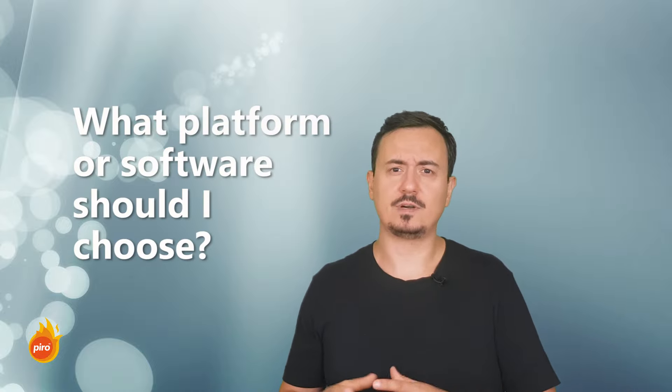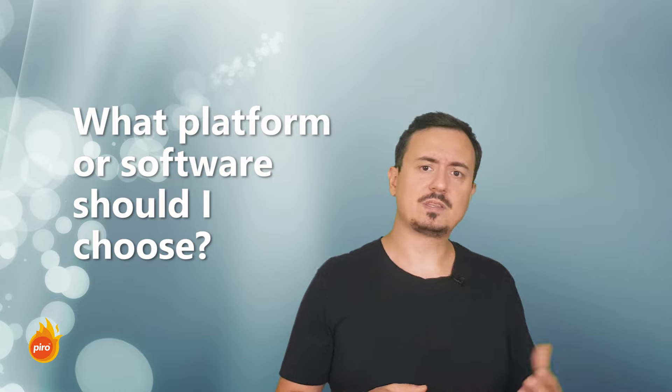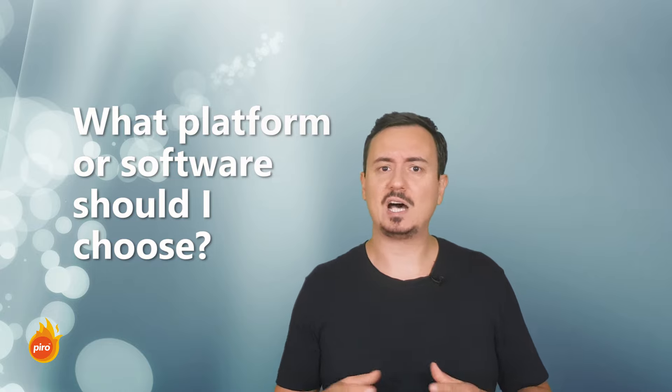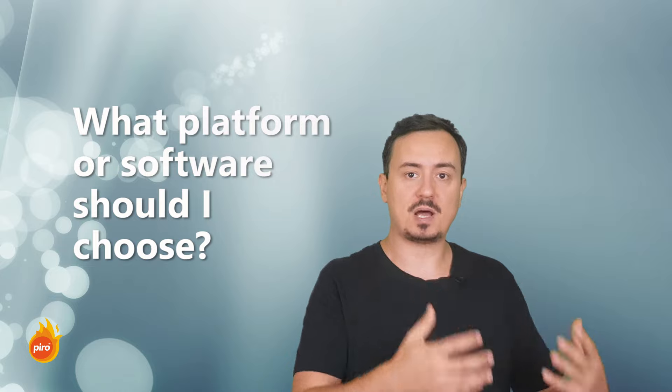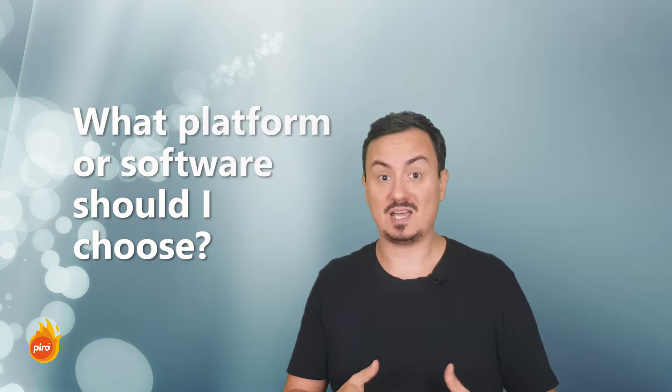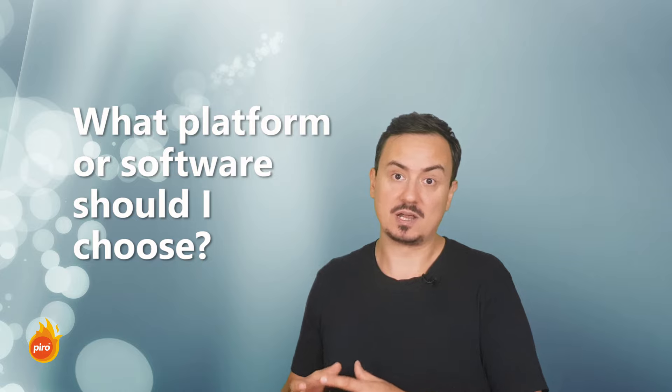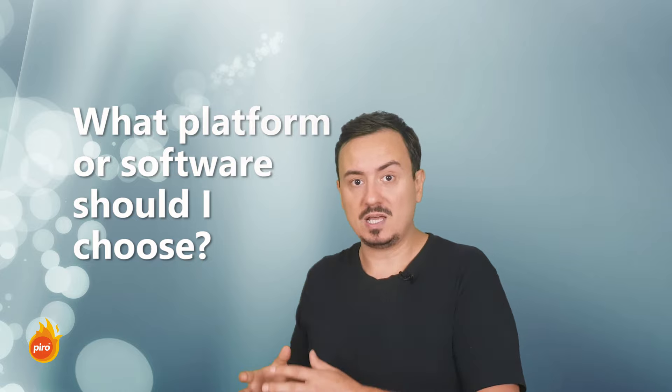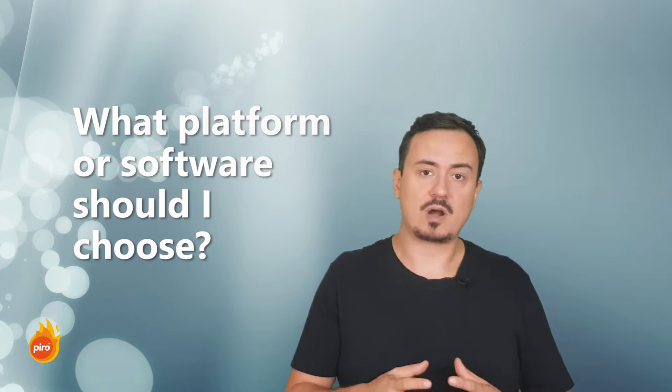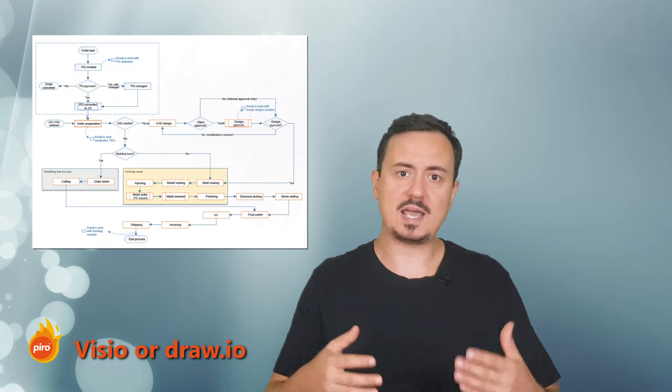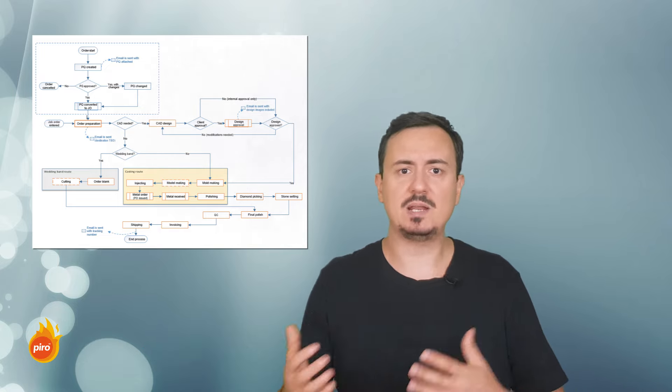The very first question should be, if I'm implementing an ERP system, what platform or software should I choose? So as with everything, you should start out with what you already know. So you should take a look at your processes and write down every step that is not generating value for your customer. That should be pretty clear. Now, you can make a list, you can maybe create a flowchart of your operation, you can use tools like Visio or draw.io, and this will help you have that full picture.